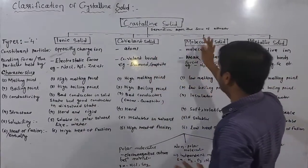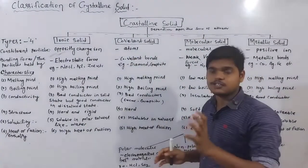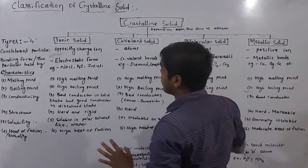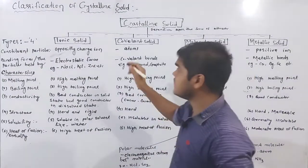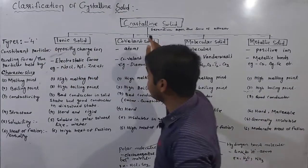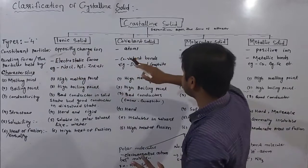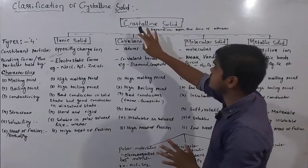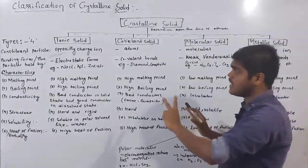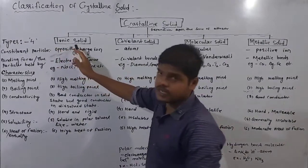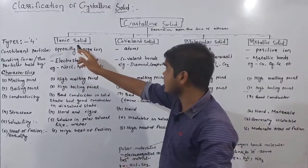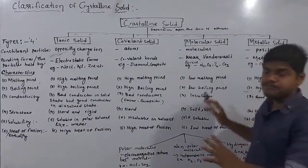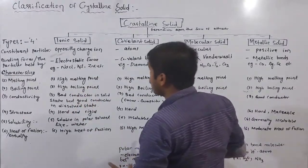Depending upon the force of attraction, crystalline solids are basically divided into four types. The first one is ionic solid, second one is covalent solid, third one is molecular solid, and fourth one is metallic solid.